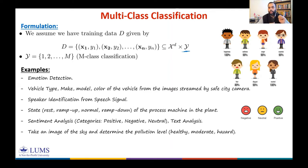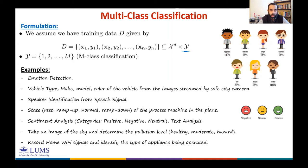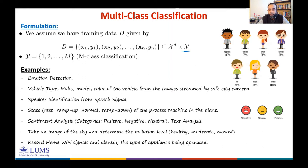You go outside, take a photo with your smartphone, and that application determines the air pollution level. Another example is what we do in our lab: we record home WiFi signals and want to identify the type of appliance being operated. You have a device that receives WiFi signals, and from the signature and strength of those WiFi signals, you can determine whether the microwave is on or whether the fridge is on. Again, this is a non-trivial multi-class classification problem.